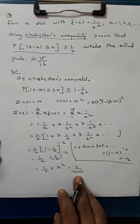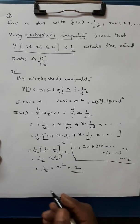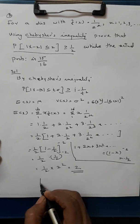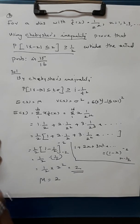That is 1/2 times 2 squared, which equals 2. So our mean E(x) equals 2, that is mu equals 2.